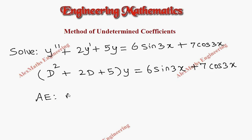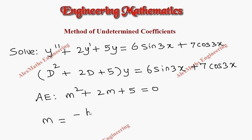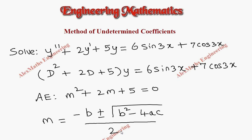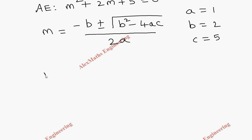As the first part of solving, we have to write the auxiliary equation, which is m² + 2m + 5 = 0. We cannot factorize this since product is 5 and sum is 2, so we use the quadratic formula: m = (−b ± √(b²−4ac)) / 2a. The values are a=1, b=2, c=5.